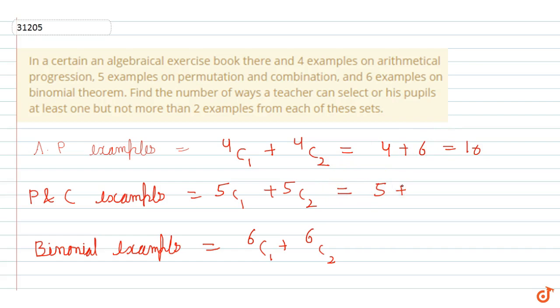Similarly, 5C1 equals 5 and 5C2 equals 5 times 4 divided by 2, which equals 10. So the total value equals 15.